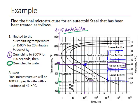However, there is no more austenite remaining. So regardless of the fact that we are quenching and entering a new region on the diagram, there is nothing left to transform. Therefore, the final microstructure will be 100% upper bainite with a hardness of 41 HRC.